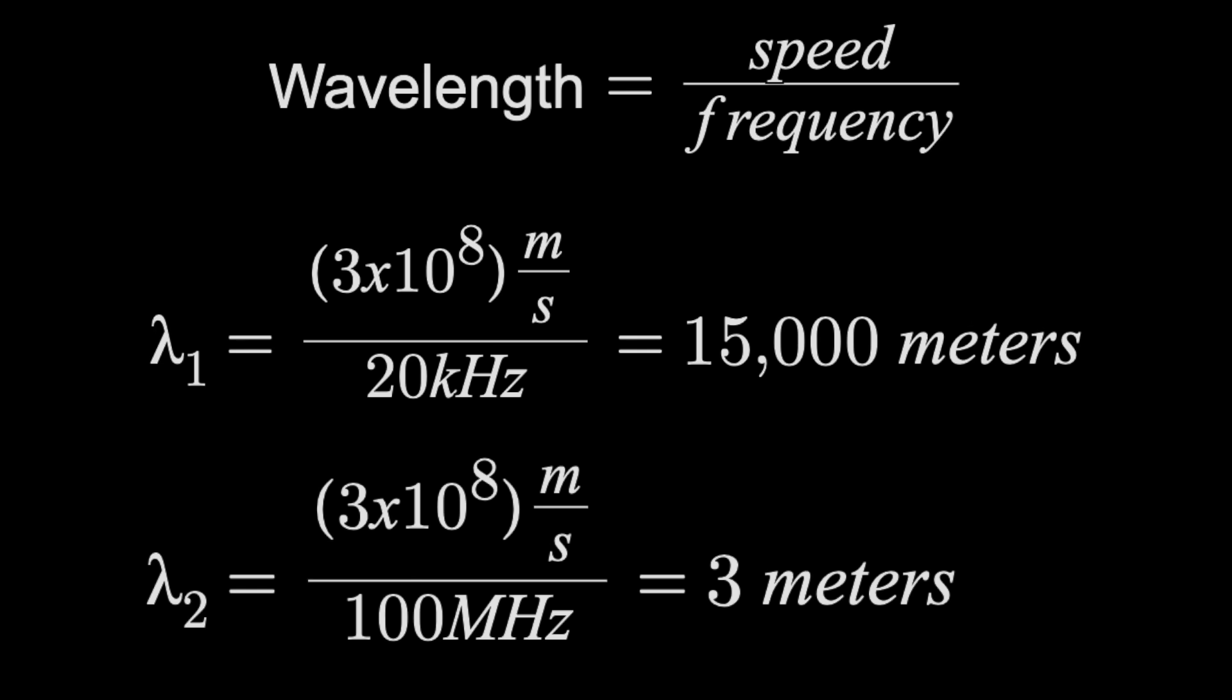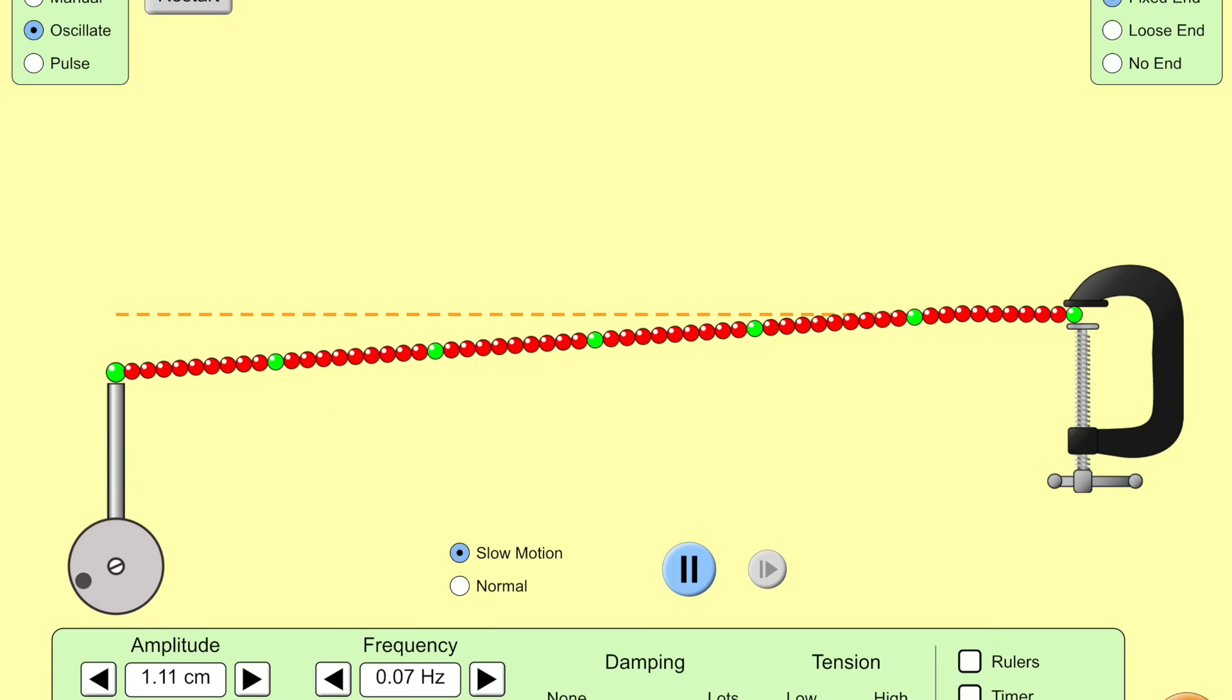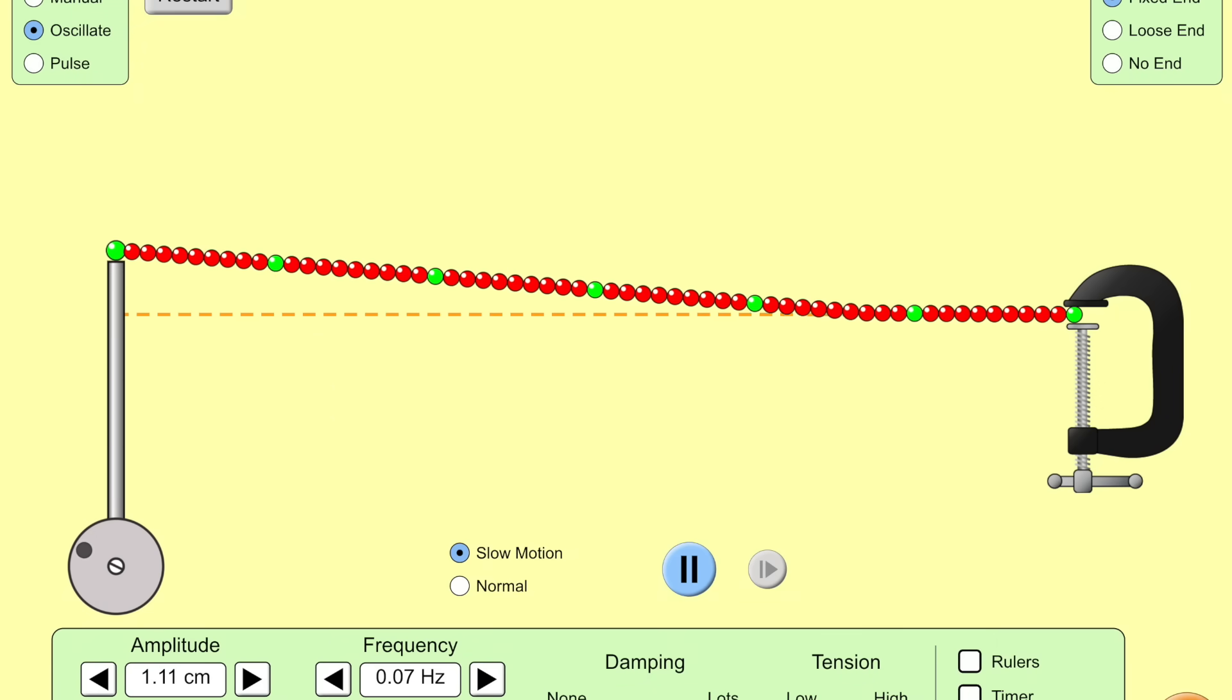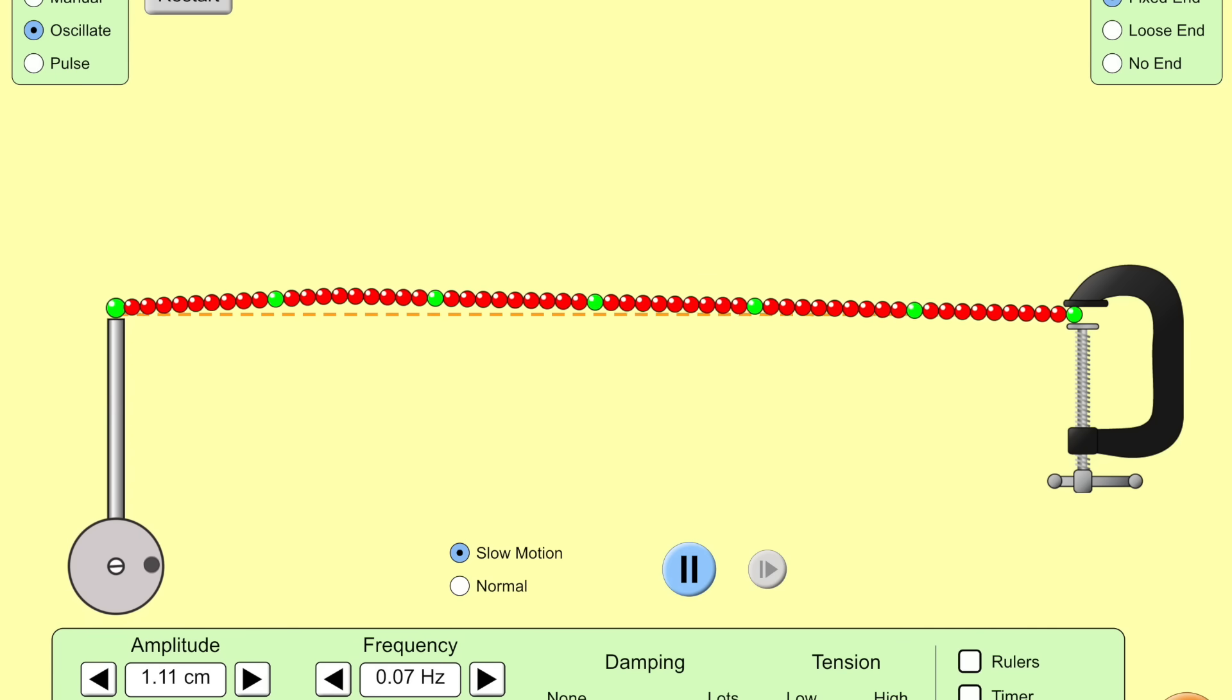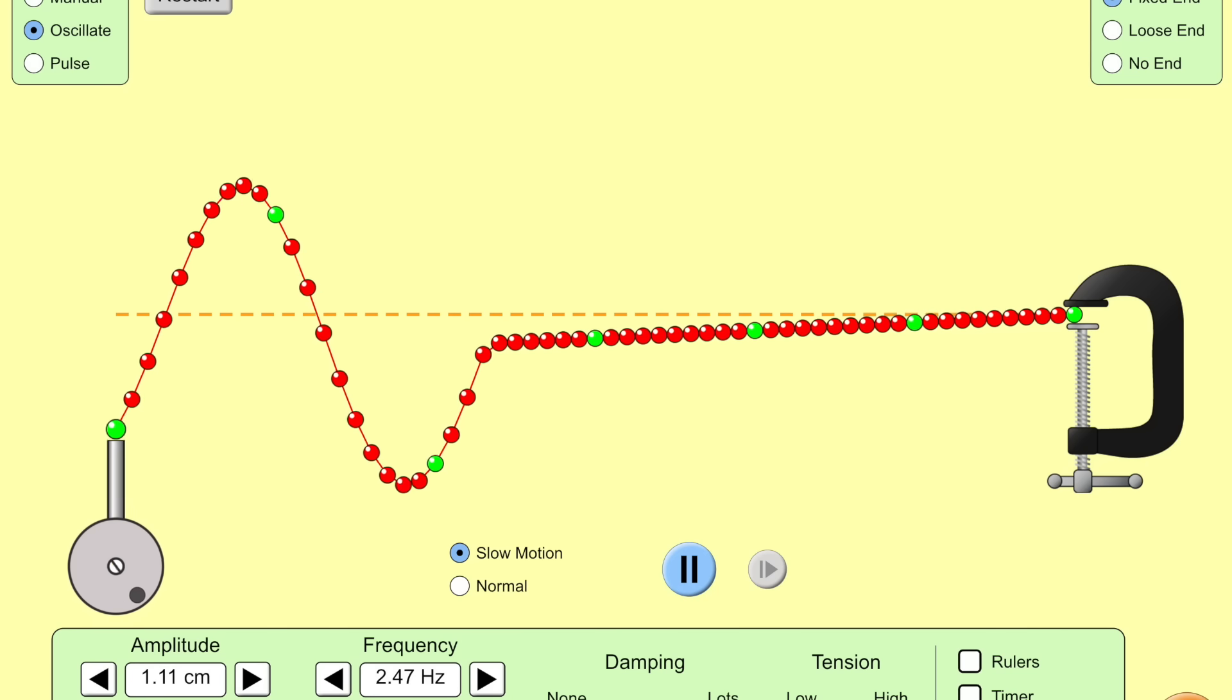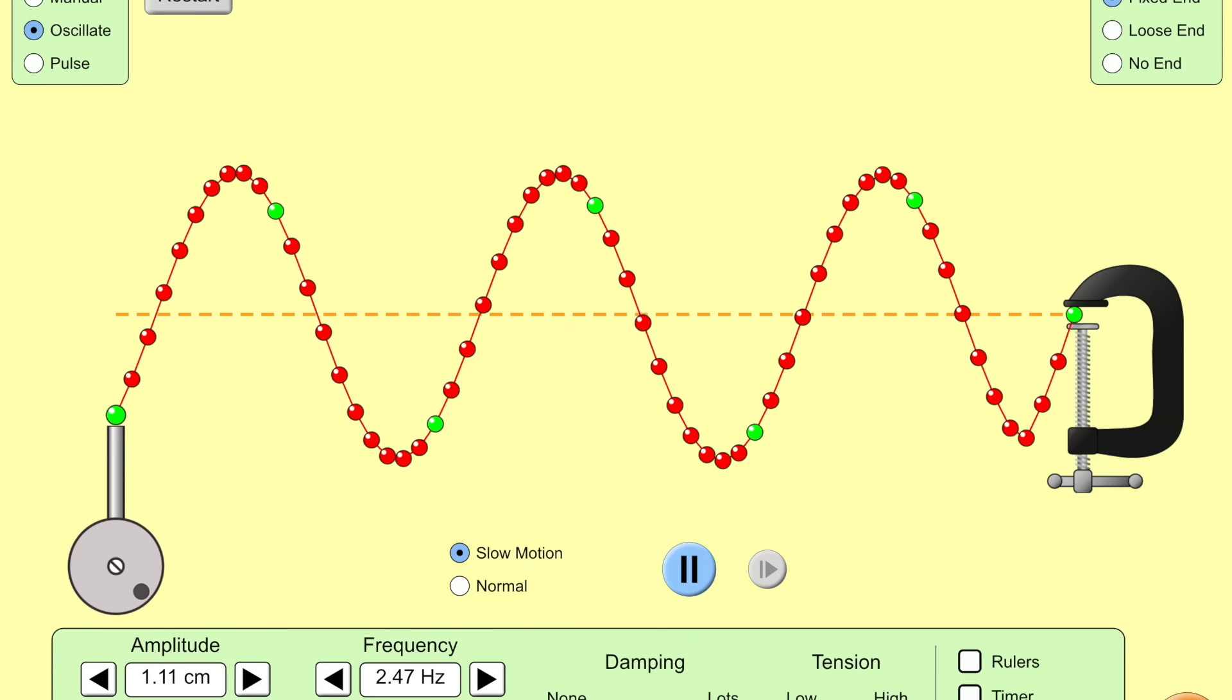Just like if I take a rope and pulse it very slowly, the rope moves in a very predictable way, because the actual wavelength is so much longer than the rope itself. But pulse that rope faster, where the wavelength is comparable or shorter than the rope, and then you're going to get reflections and things get more complicated.